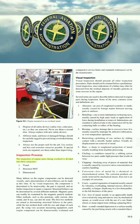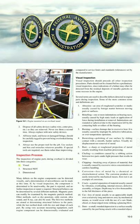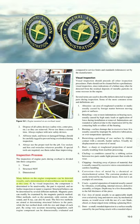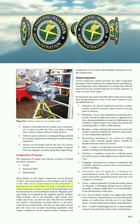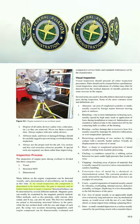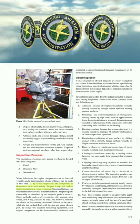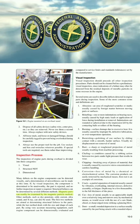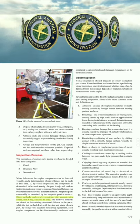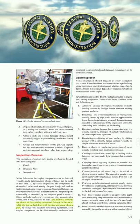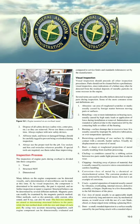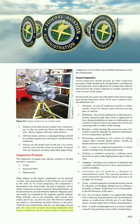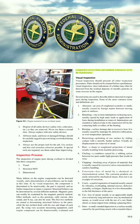Inspection process: The inspection of engine parts during overhaul is divided into three categories: (1) visual, (2) structural/NDT, and (3) dimensional. Many defects on engine components can be detected visually and the determination of airworthiness can be made at this time. If, by visual inspection, the component is determined to be unairworthy, the part is rejected and no further inspection or repair is required. Structural failures can be determined by several different methods. Magnetic parts can readily be examined by the magnetic particle method. Other methods such as dye-penetrant, eddy current, ultrasound, and x-ray can also be used. The dimensional method deals with the size and shape of each part, using very accurate measuring equipment, so each engine component can be evaluated and compared to service limits and tolerances set by the manufacturer.